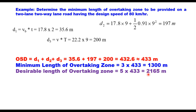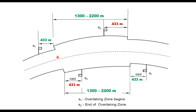Marking all these distances on the figure: one OSD before the start of the overtaking zone, sign S1 informs the driver that the overtaking zone starts 433 m ahead — the same applies for vehicles coming from the other direction. The length of the overtaking zone varies from 1300 m to 2200 m. One OSD before the end of the overtaking zone, a sign informs the driver that the overtaking zone is ending — the same sign is provided for drivers coming from the opposite direction.